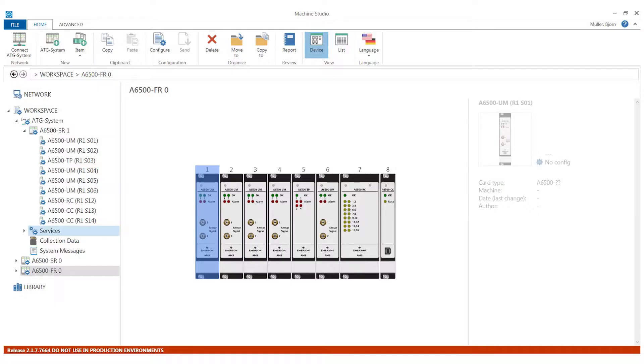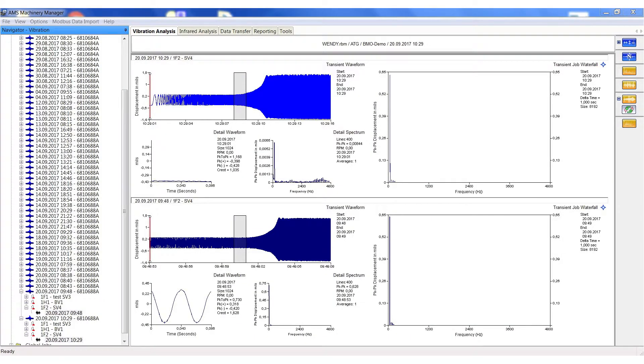Predictive data can be either viewed in Machine Studio, the ATG configuration software, or being provided by AMS Machinery Manager for analysis purposes as well.